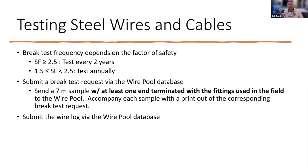If you send us a 30-foot or 10-meter sample, that gives us enough to do a couple of tests. If one end has a vessel-applied termination, we still have enough left over to produce another sample with wire pool applied terminations and break that as well. We'll enter the highest result into the database. Once you put in a request, we get notified, but you don't get in the queue until your sample reaches us. We've had cases where a break test request was submitted but we never received the sample — we can't do anything without it.